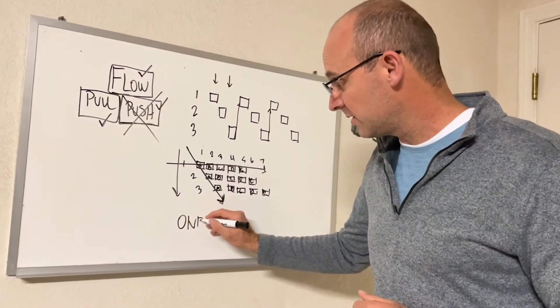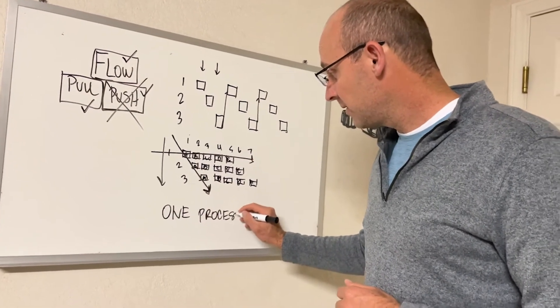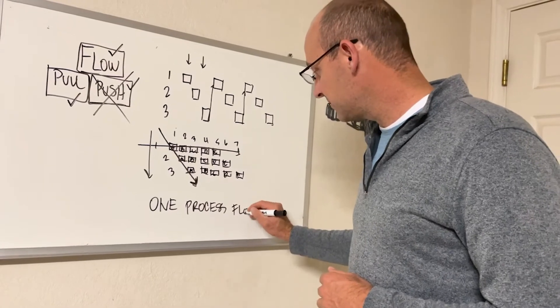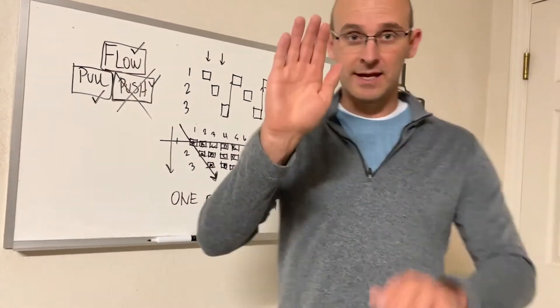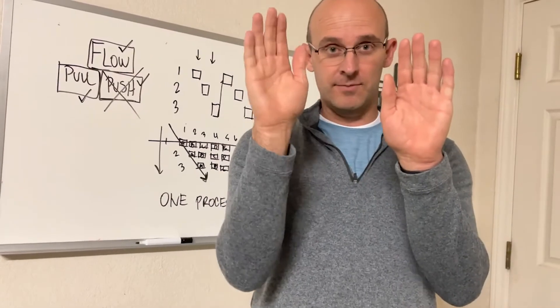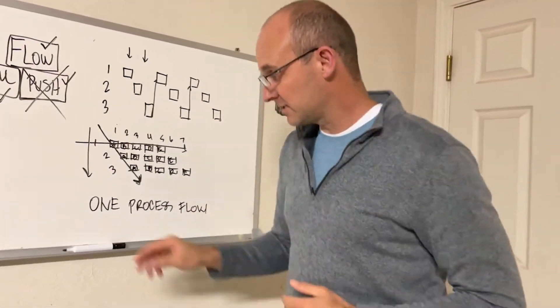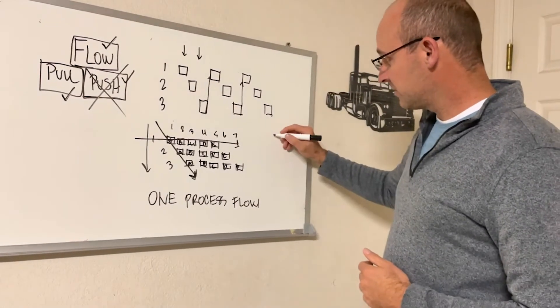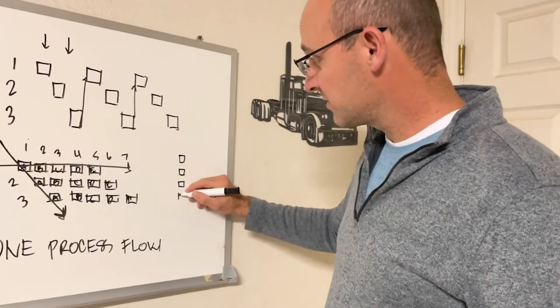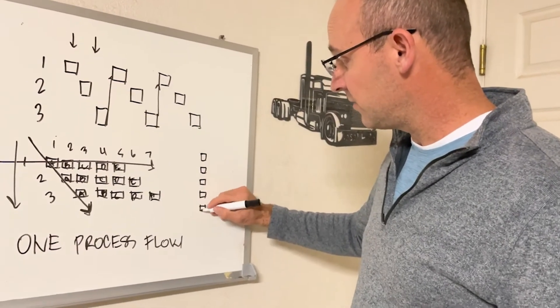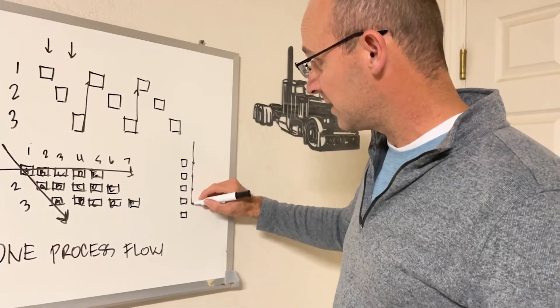And it's called one process flow. You've heard of one-piece flow. Let me see if I can do this with my hands here really quickly. Pretend my right arm, these are pieces of equipment. Actually, I'll just do this on the board. These are pieces of equipment in a manufacturing plant. When you say one-piece flow, that piece of material comes through that assembly line and comes out to the end, and they finish that one piece.